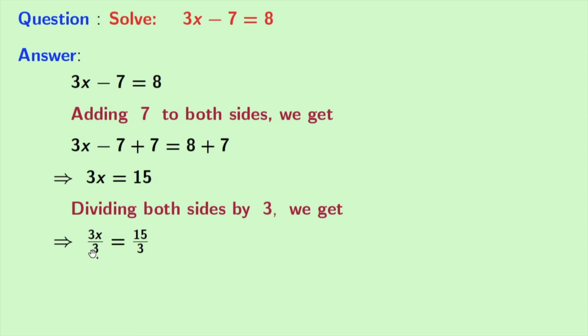In the left hand side, 3 and 3 get cancelled and we have x. And in the right hand side we have 15 by 3, that is 5. So we have x equals 5. This is our final answer.